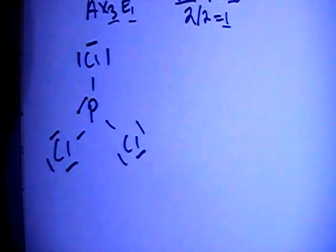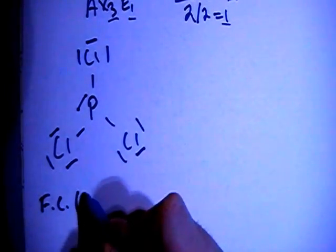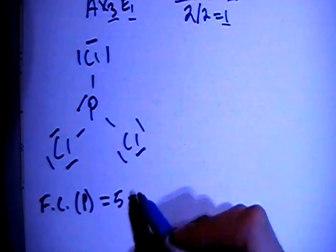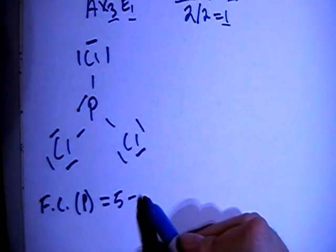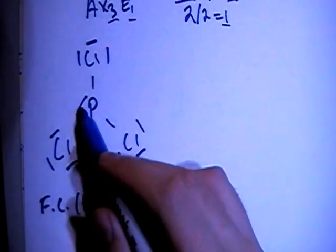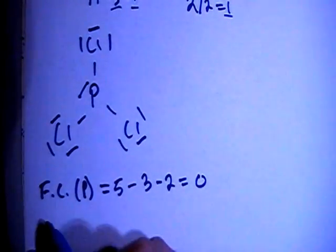but let's go ahead and check the formal charges to make sure. The formal charge on the phosphorus is going to be 5 valence brought in, minus the 3 bonds, minus 2 non-bonding electrons, which is a formal charge of 0. So that's good.